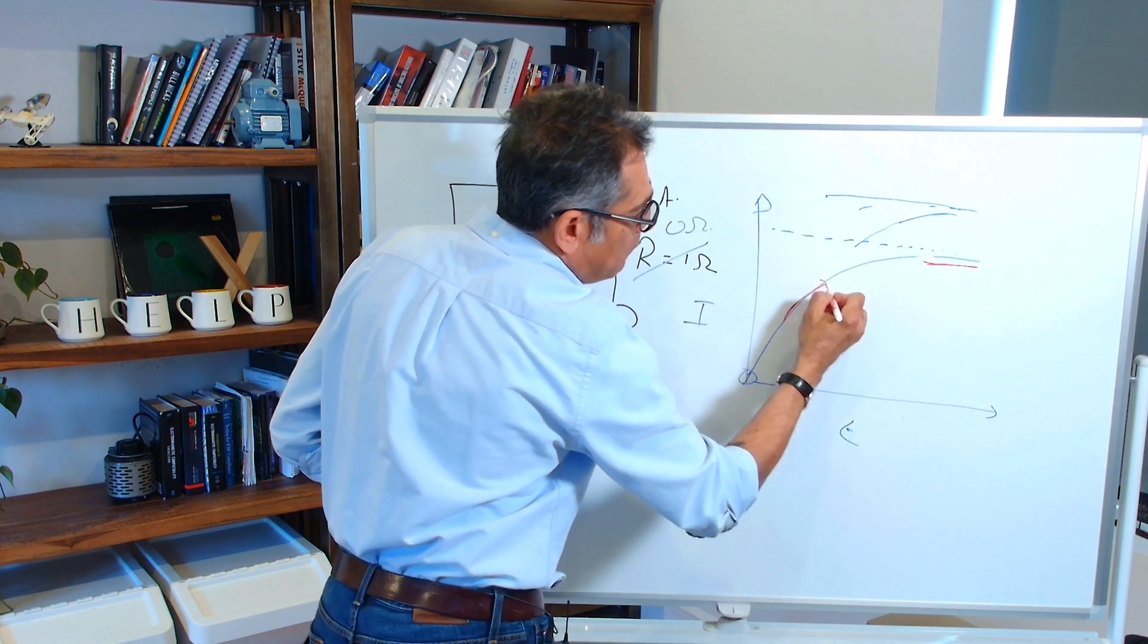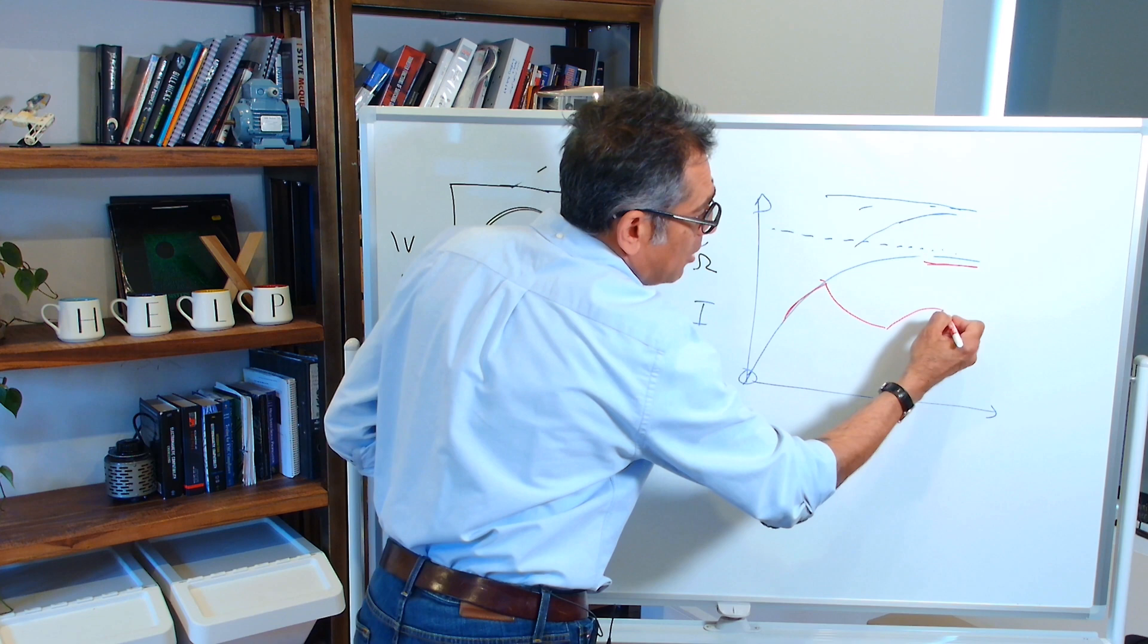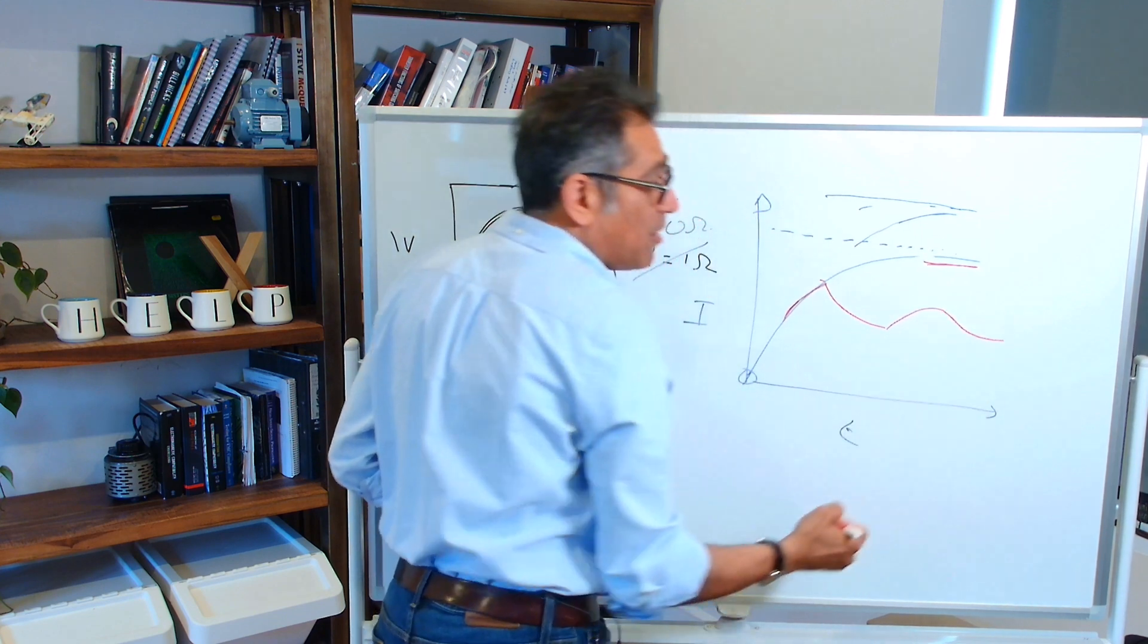But because I don't let it reach this asymptote, I turn the switch off, the current goes down. Then I turn the switch back on, the current goes up. Then I turn the switch back off and the current goes down.